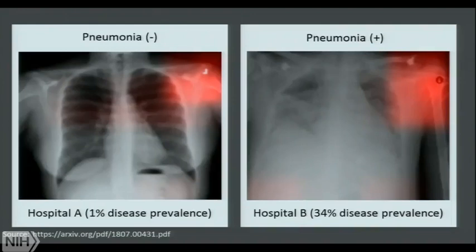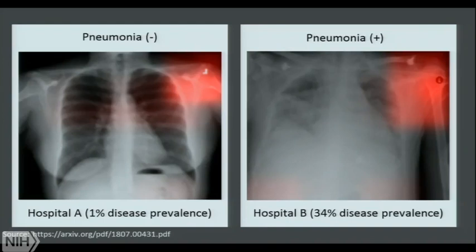An even better example came from a Google collaboration with Mount Sinai. They wanted to create a multi-institutional dataset to predict pneumonia on chest X-rays. But when they looked at what the classifier was making its decisions on using saliency maps, it was looking at the laterality marker. The two hospitals used different laterality markers, and hospital A had 1% disease prevalence while hospital B had 34%. The classifier just had to be a hospital classifier and it did a great job detecting pneumonia — obviously not clinically useful.